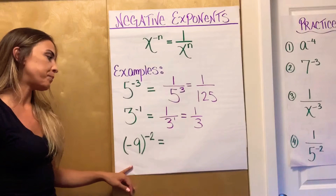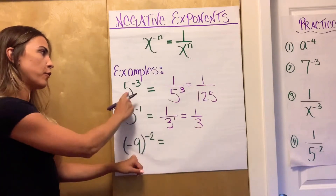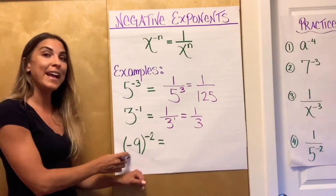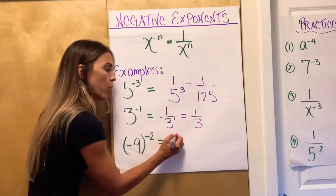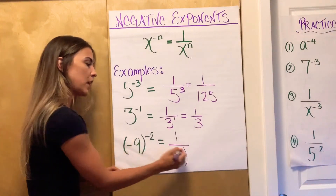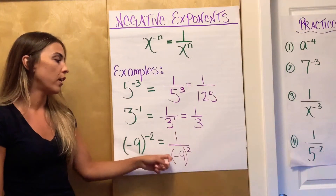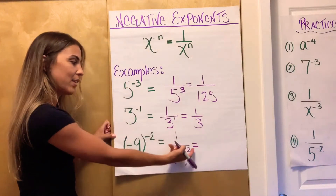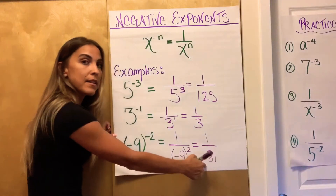Now this last example has one little thing that makes it different from the others. We have to keep the base — we kept the 5, we kept the 3, and now we're going to keep the negative 9. The negative law of exponents does not change a negative base; it just changes the negative exponent. So I'm still going to follow this law: 1 over — but make sure to keep that base the same, negative 9. The only thing that changes is that negative second power becomes a positive 2. So it's 1 over negative 9 to the second power, or 1 over 81, because negative 9 times negative 9 is positive 81.